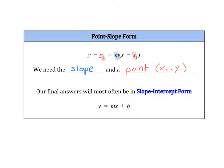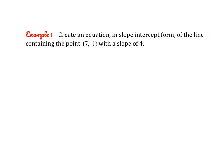Point-slope form allows us to make an equation with more general information. All you need to do is find the slope and any point, then plug in your values for m, x1, and y1. You do need to watch out for the minus signs because they are built into the equation. Alright, let's give this a try.